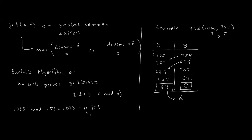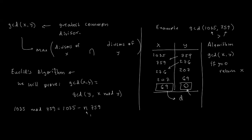It's very easy to write a recursive algorithm for this. GCD(x, y): if y equals 0, return x. Otherwise, return GCD(y, x mod y). That's the algorithm.